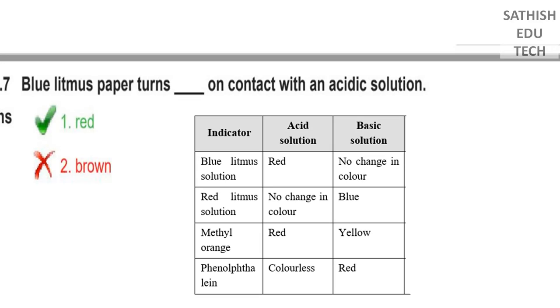The 4 indicators are: 1) blue litmus, 2) red litmus, 3) methyl orange, and 4) phenolphthalein. So we have 4 sources. We have the acid solution and base solution.